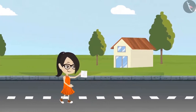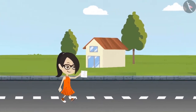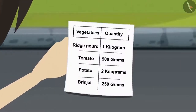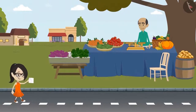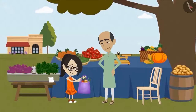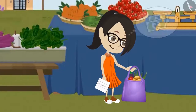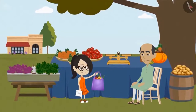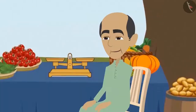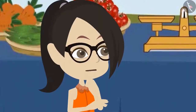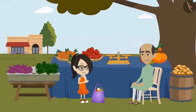Vandana is going to buy vegetables all by herself from the market today. She has created a list of all the vegetables she has to buy. She has reached the vegetable shop, bought all the vegetables on the list, and now she has to pay the vegetable seller. She asks how much all the vegetables cost, and he immediately tells her they are worth 67 rupees.